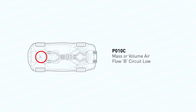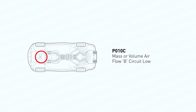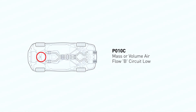Diagnostic trouble code DTC P010B stands for mass or volume airflow B circuit range of performance. This error code is set when the powertrain control module PCM perceives a potential problem with the mass airflow MAF sensor or its circuit.